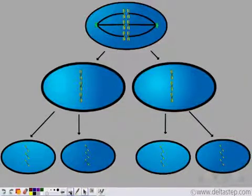One cell divides to form four cells with half the number of chromosomes.